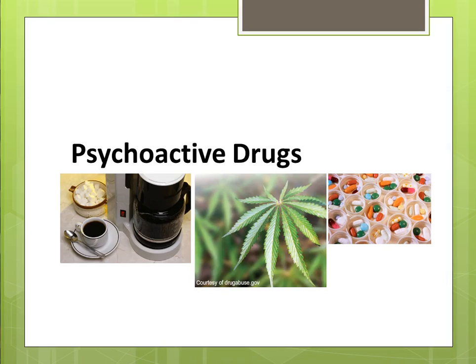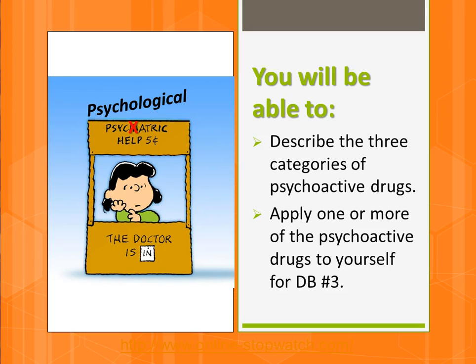Hi, it's Dr. Z. I'll be discussing the three categories of psychoactive drugs, which I lovingly refer to as uppers, downers, and all-arounders. By the end of this video, you'll be able to describe stimulants, depressants, and hallucinogens. You will also be able to apply one or more of these psychoactive drugs to yourself for discussion board number three.